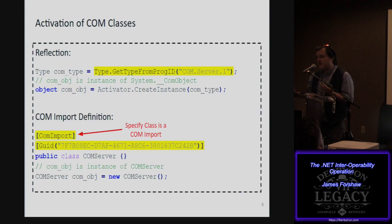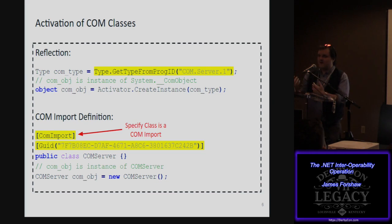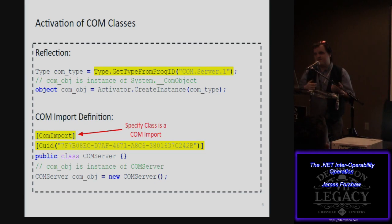Activating COM classes in .NET is fairly simple — it's all built in. You can do it via reflection from its programmatic ID, its prog ID, or its class ID. Just create a type, pass it to the activator, and you create a COM object.